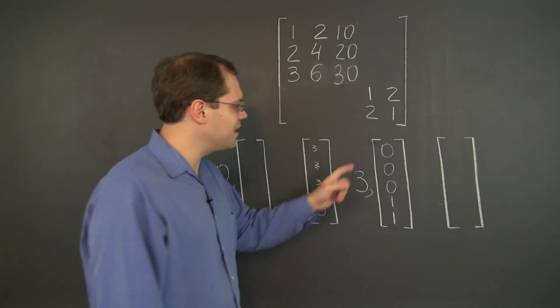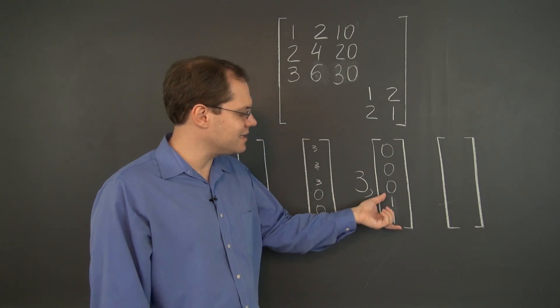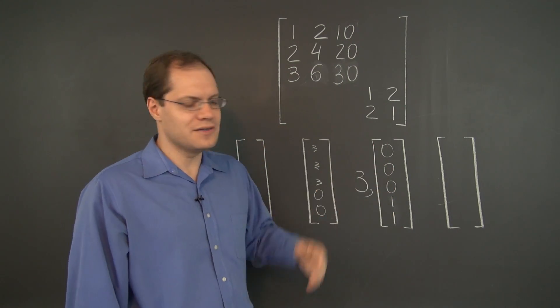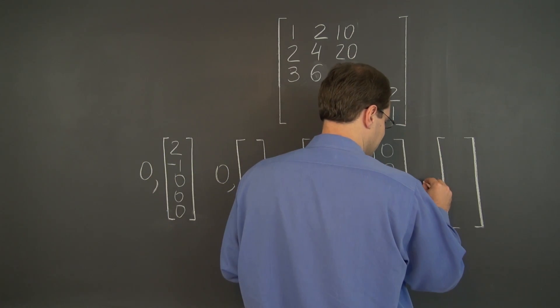So there is an eigenvalue that equals the eigenvalue of this matrix. And the corresponding eigenvector is the eigenvector of this matrix pre-filled by three zeros. And another eigenvalue for this matrix was minus one.